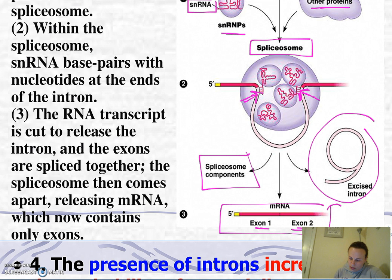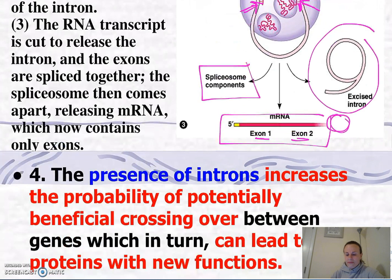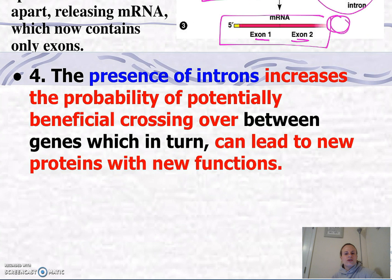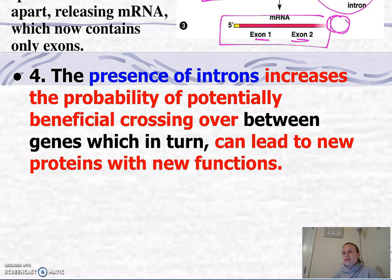The spliceosome then comes apart, releasing its components and the messenger RNA, which now only contains the exons — along with the poly-A tail. You might ask why we have these non-coding regions and why we'd create an extra step to remove them. Well, the presence of introns increases the probability of potentially beneficial crossing over, because the greater the distance between genes on a chromosome, the more likely crossing over is to occur. This can lead to new proteins with new functions, which can be beneficial — this is how evolution happens.